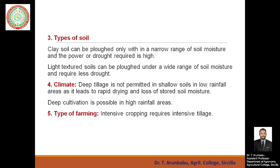The third factor is type of soil. Clay soils are heavy and can be plowed only within a narrow range of soil moisture, requiring very high power. Light-textured soils like sandy soils can be plowed under a wide range of soil moisture and require less power. Regarding climate, deep tillage is not permitted in shallow soils in low-rainfall areas as it leads to rapid drying and loss of stored soil moisture, whereas deep cultivation is possible in high-rainfall areas.